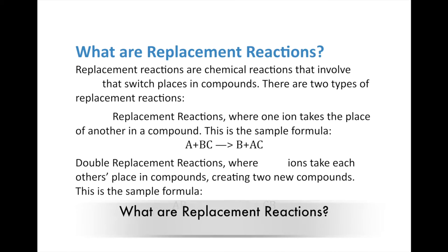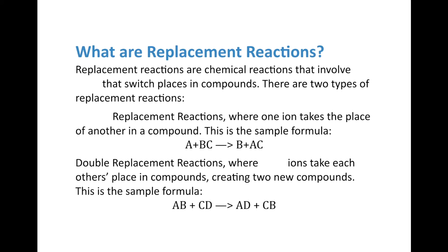On to number three — and actually four also — replacement reactions. These are chemical reactions that involve ions that switch places in compounds. Replacement reactions generally only involve ionic bonds, and can also include metallic bonds. There are two types. The first are single replacement reactions, where one ion takes the place of another — they swap each other out. The formula looks like this: A plus BC yields B plus AC, so substances A and B switch places.